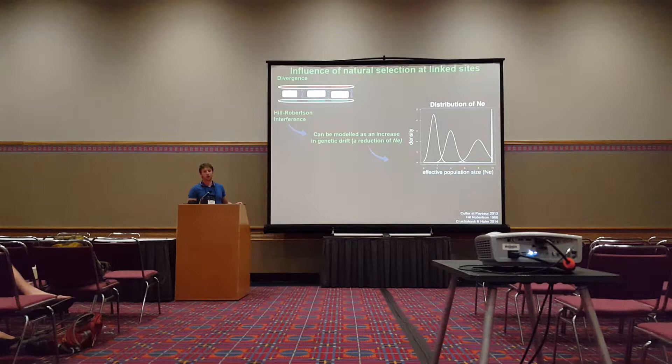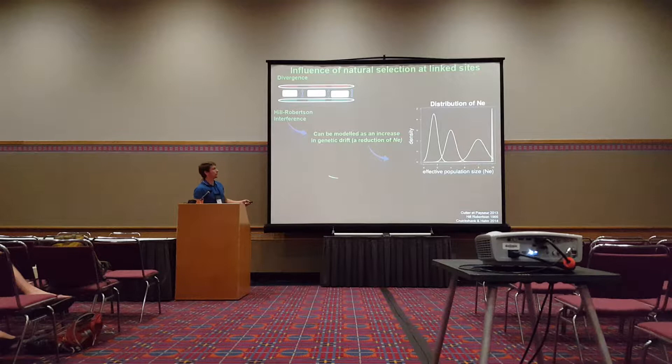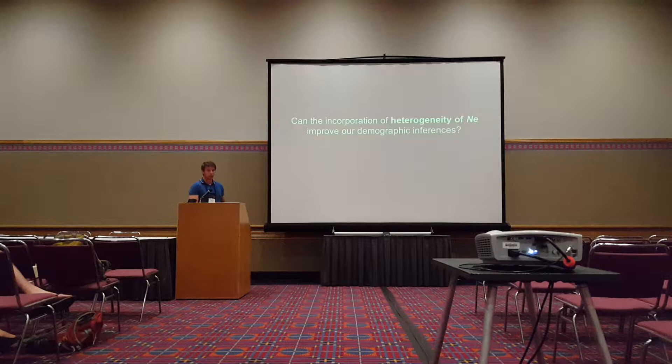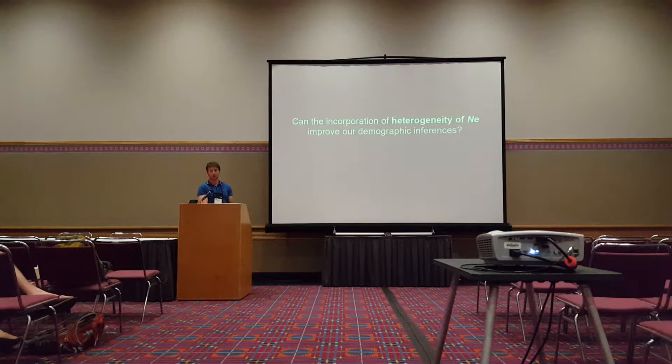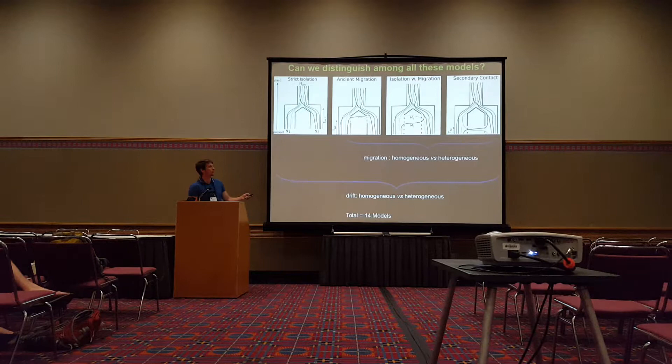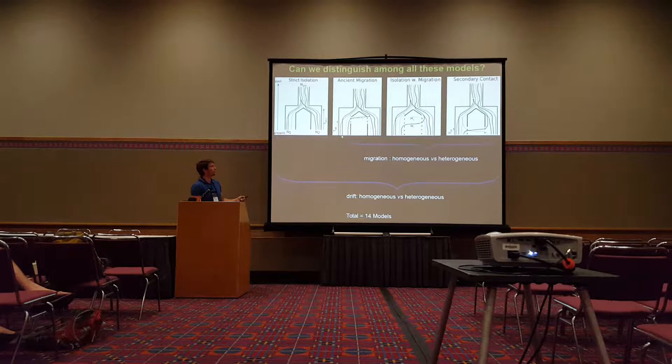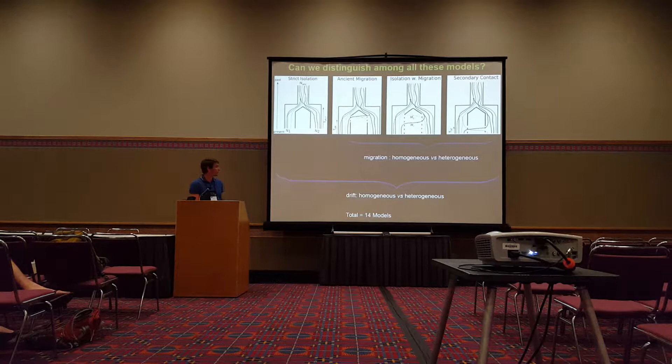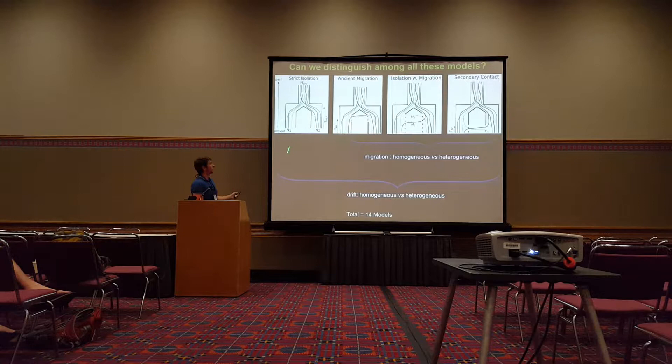So one question is: can the incorporation of heterogeneous levels of gene flow and effective population size along the genome improve our demographic inference? In summary, I will compare four major demographic models with two possible migration scenarios — either homogeneous or heterogeneous migration rate — and with strict isolation having no migration. We also incorporate in all models the possibility for linked selection, which will result in variation in drift along the genome.